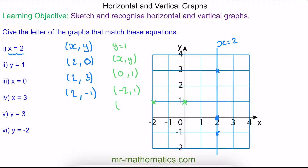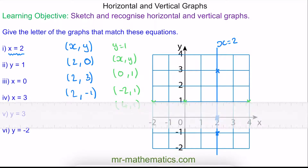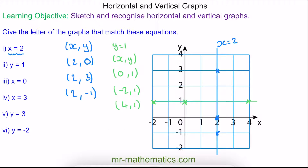One more coordinate: we could have 4 and 1, which would be at this point. Now you can see the coordinates joined together make a horizontal line that runs parallel to the x-axis and passes through y equals 1.